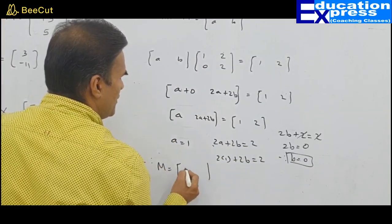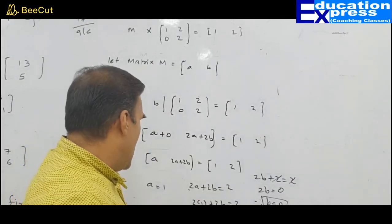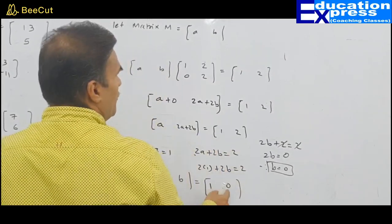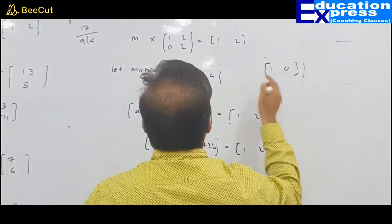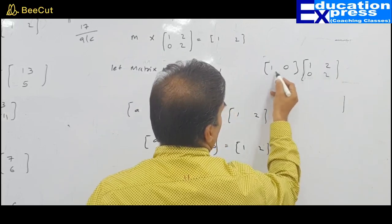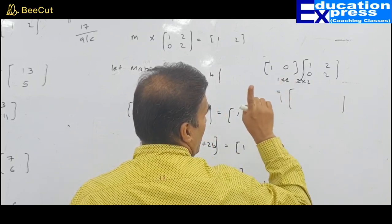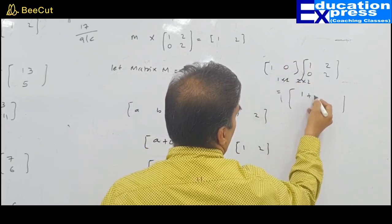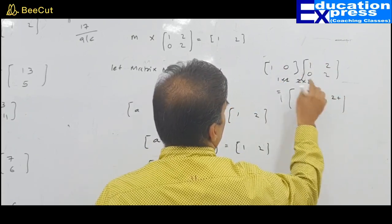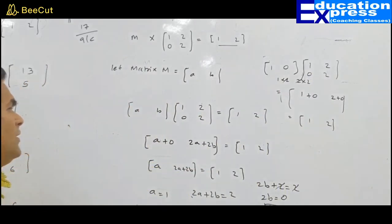Therefore matrix M, which was [A, B], is now [1, 0]. If you wish, after finding matrix M you can verify. Matrix M is [1, 0] multiplied by 1, 2, 0, 2: order 1×2 times 2×2 is possible, resulting is 1×2. 1 into 1 plus 0 into 0 is 1. 1 into 2 plus 0 into 2 is 2. So we get 1 and 2 — confirmed. Wasn't it simple?